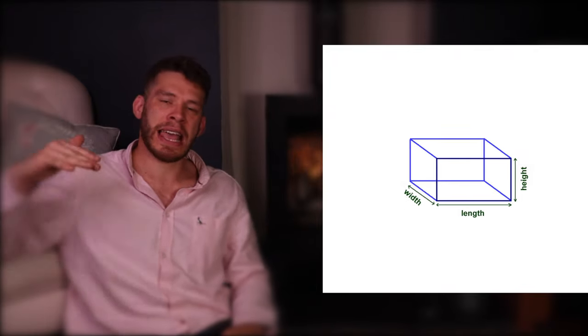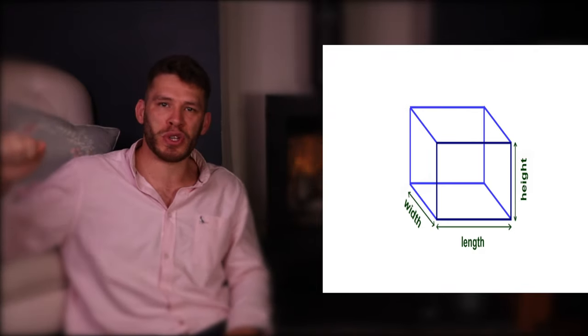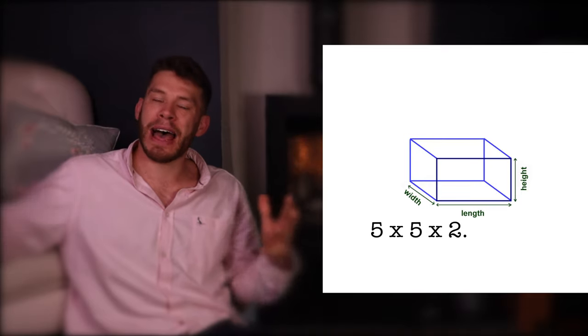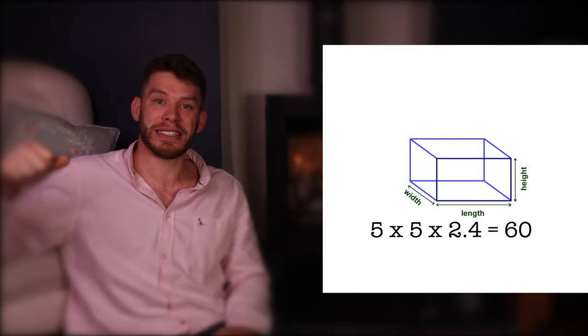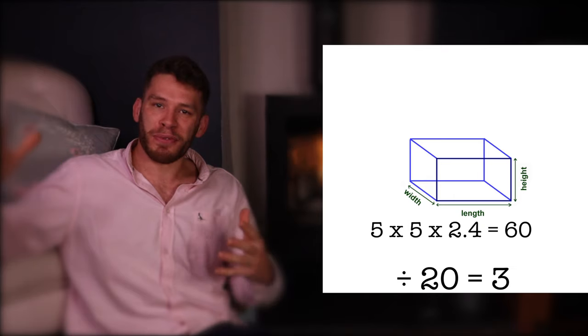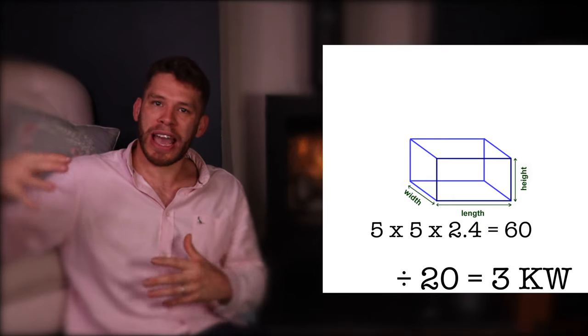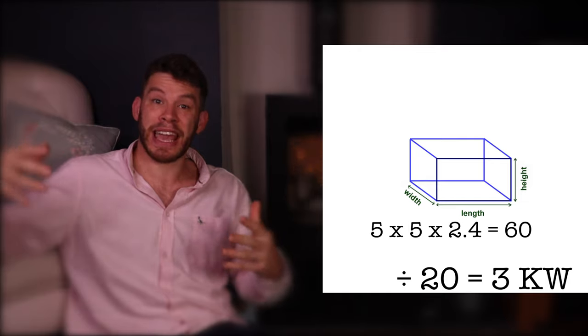So the first thing is to work out your cubic meterage of the room. So in my example, we've got a room that's five meters by five meters and has a normal ceiling height of 2.4 meters. That makes 60 cubic meters. And we divide that by 20 to work out our kilowatt requirements. Obviously, in this case, it works out at three. And that's actually going to be more powerful than you need. But potentially, you're going to want a slightly bigger stove because there aren't many three kilowatt stoves out there.